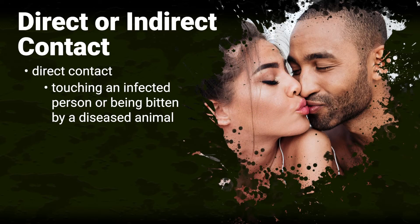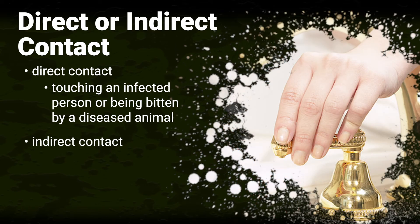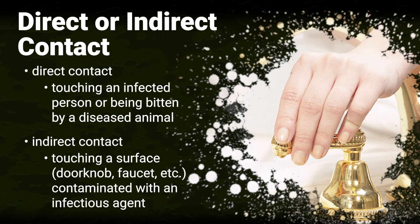Kissing and other sexual activity can also spread germs directly from one person to the next through saliva and mucous membranes. Indirect contact involves touching the surface of an object such as a doorknob or a bathroom faucet. When an infected person who has germs on their hands touches the surface of an object, germs are left behind, and a person who follows may pick up the germs from touching the same contaminated object.